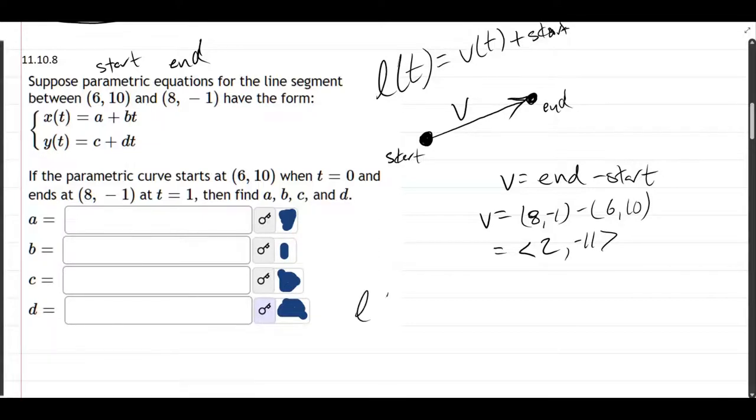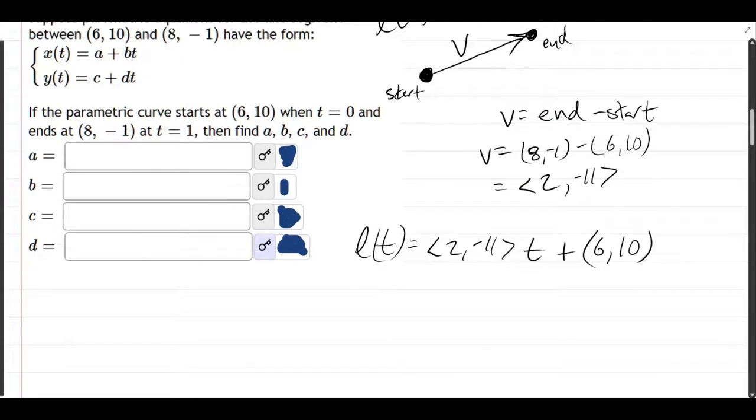And we can write the line of t. It's (2, -11) times t plus start, which is (6, 10). Okay, this may look a little weird, but just remember you're looking at two-dimensional... on the right side, you're getting two-dimensional here. So I'm going to underline the x coordinates.